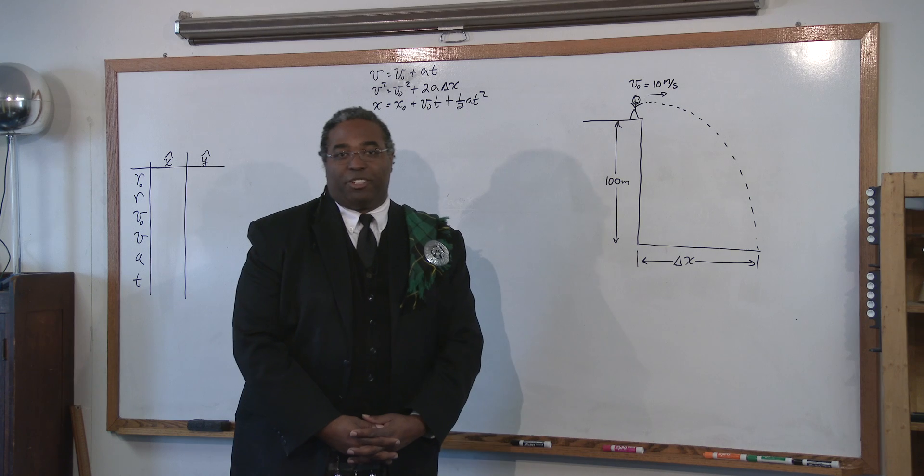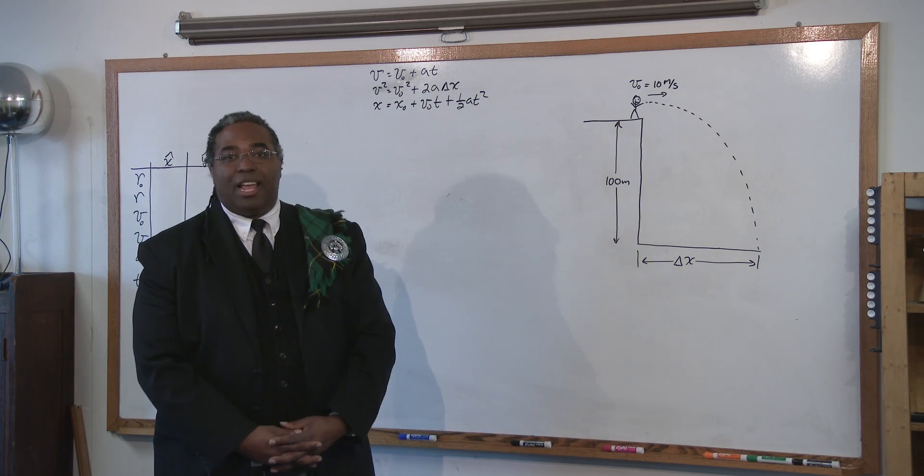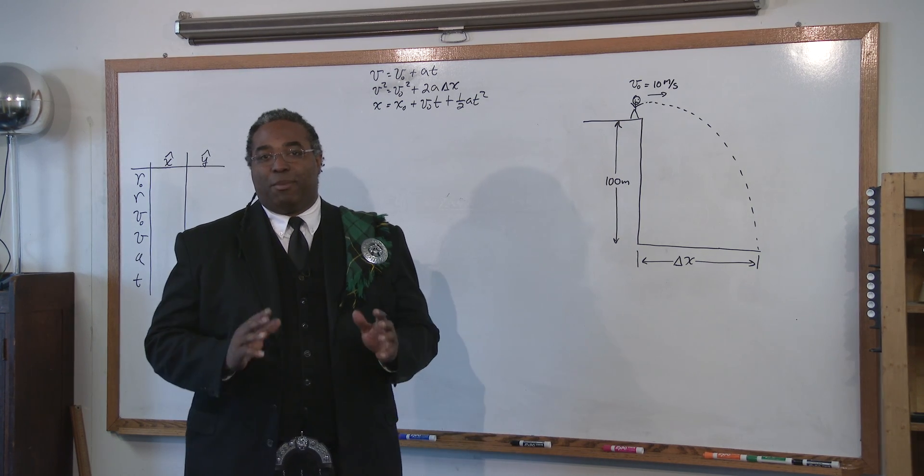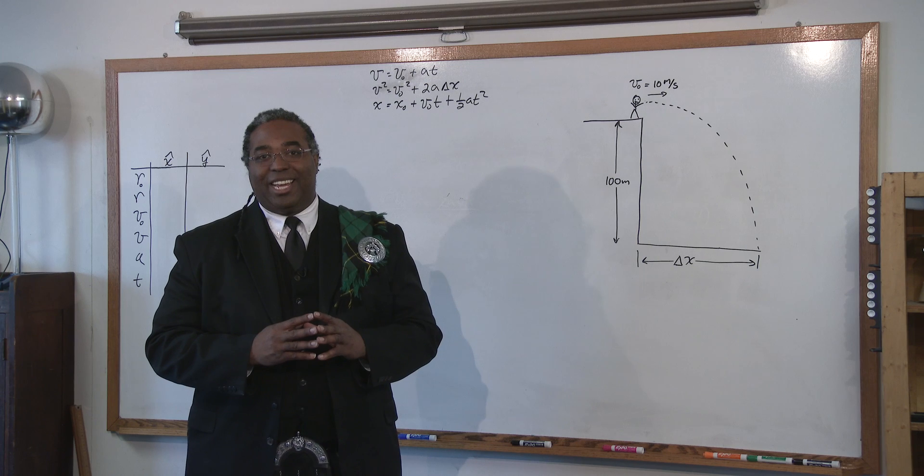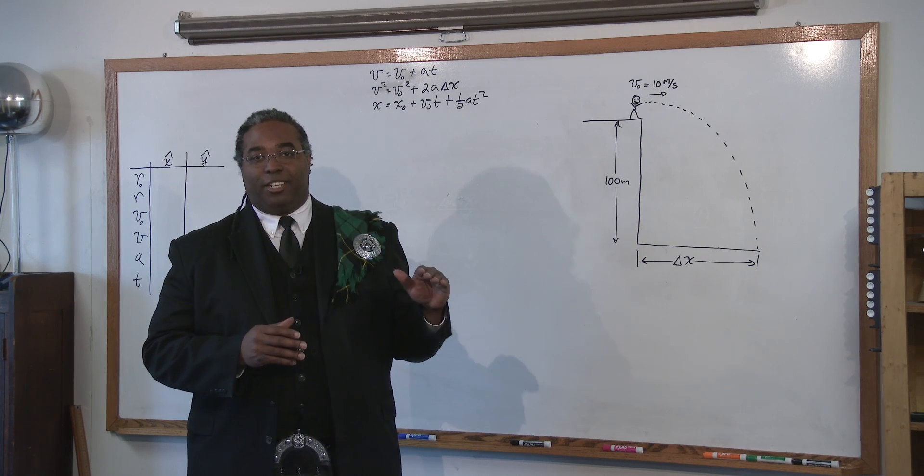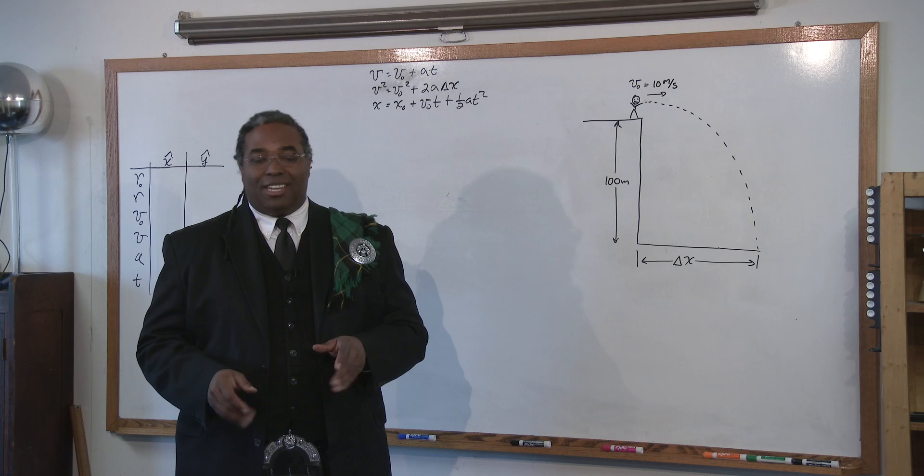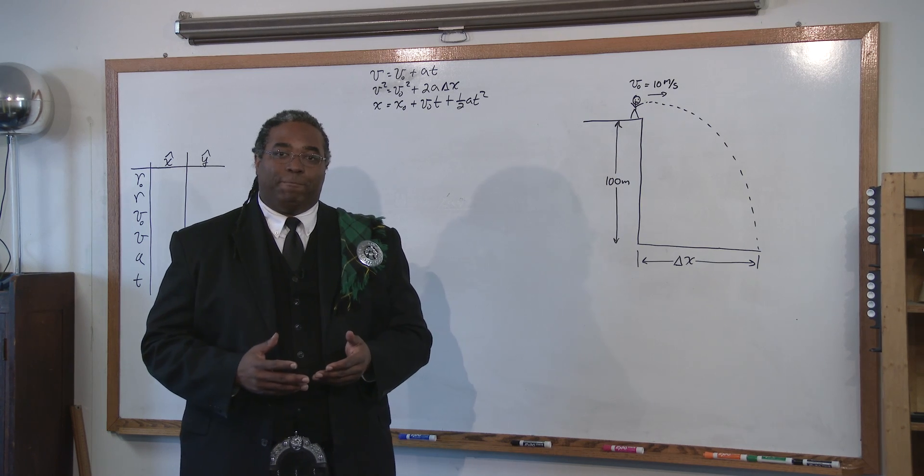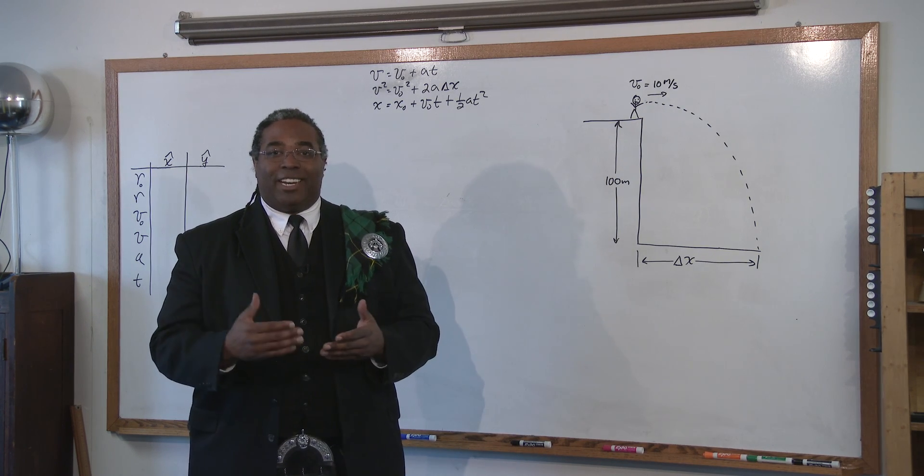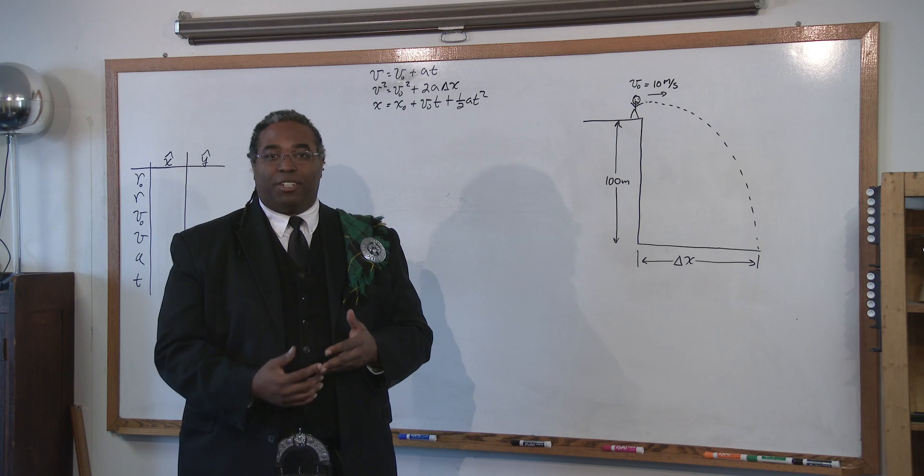So now let's get to a projectile motion problem. Now the first fundamental thing that you have to remember about projectile motion is that in the x direction the velocity is always constant. I mean, think about this for a second. What's acting on it in the y direction? What makes the object fall? Gravity.